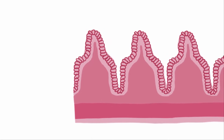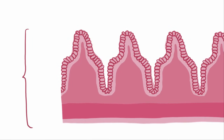The intestinal wall has lots of ridges and grooves, and can also be separated into the mucosal layer, the submucosal layer, the muscle layer, and the serosa.